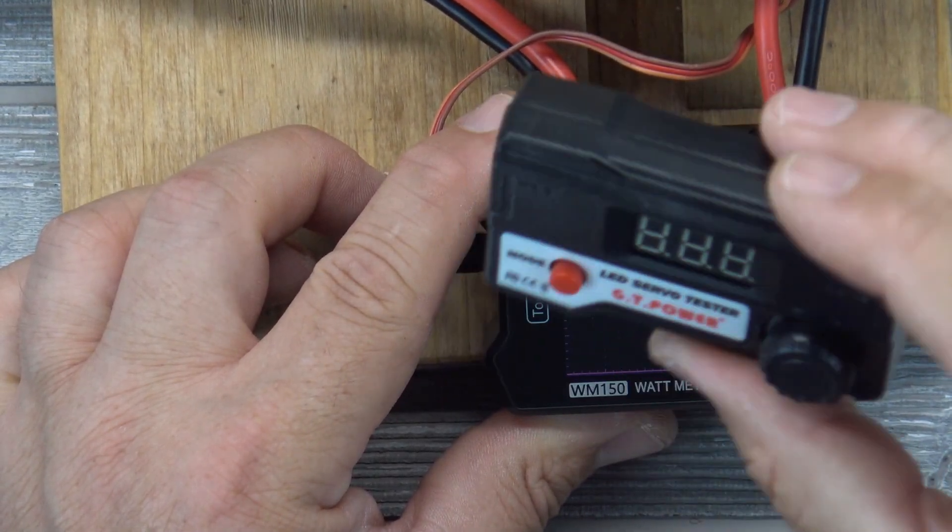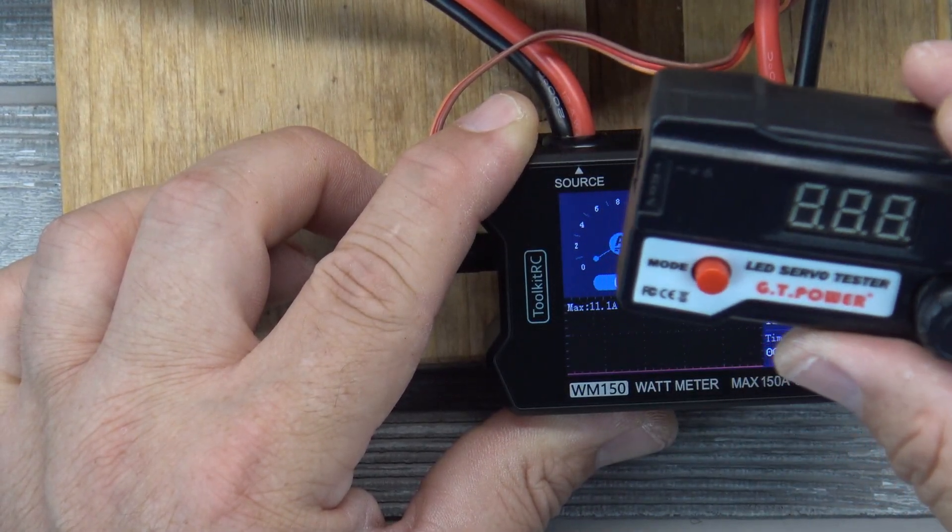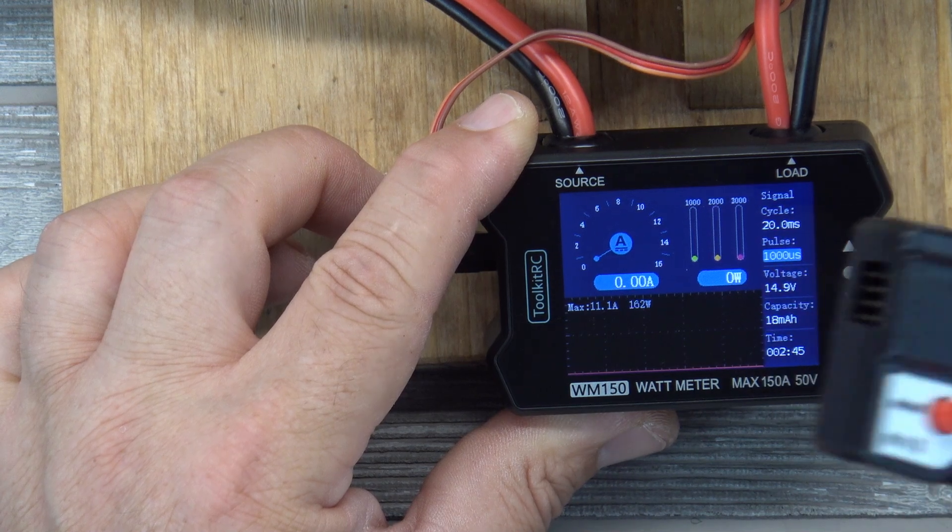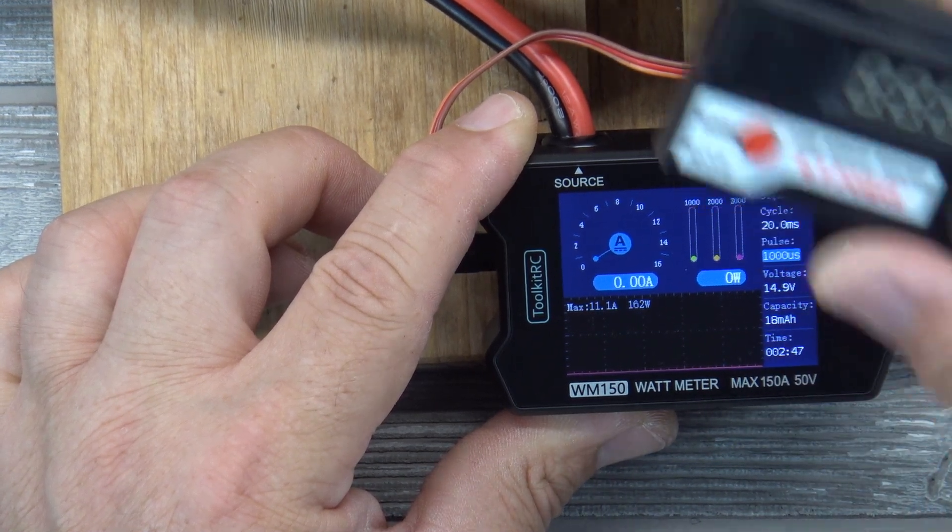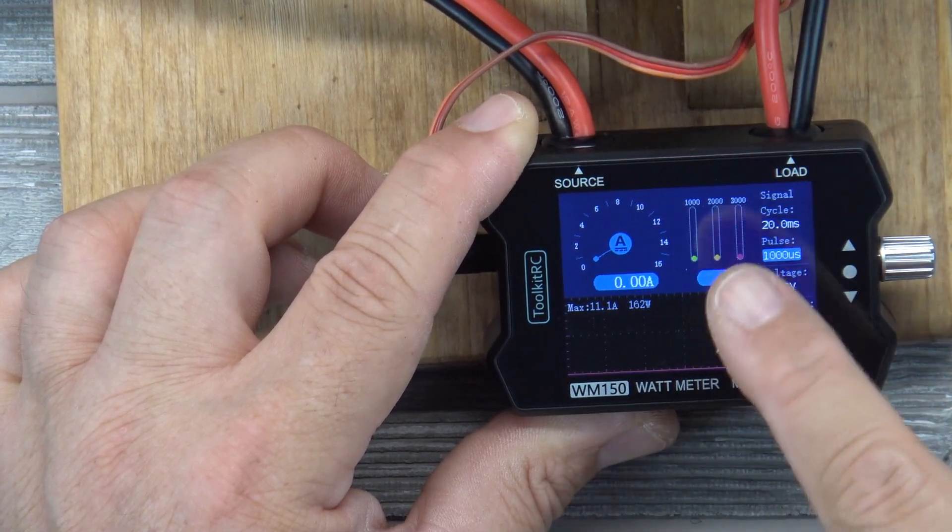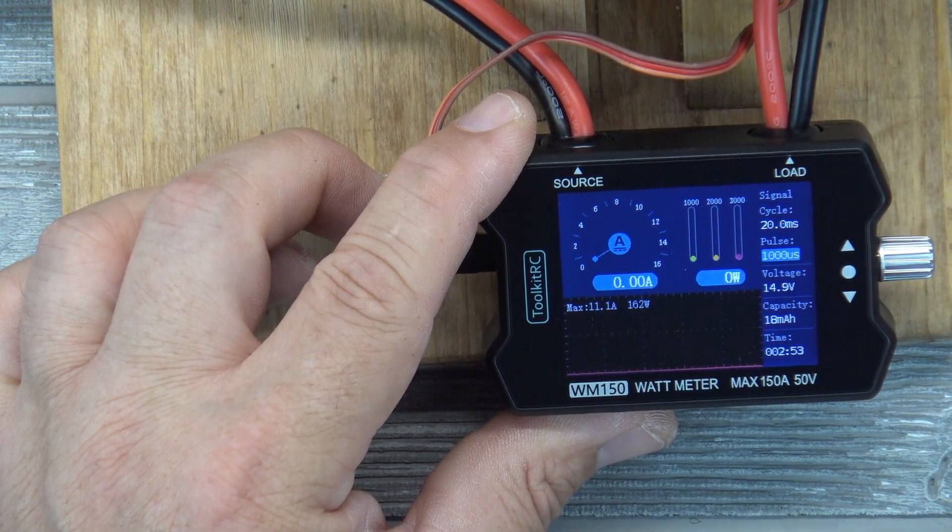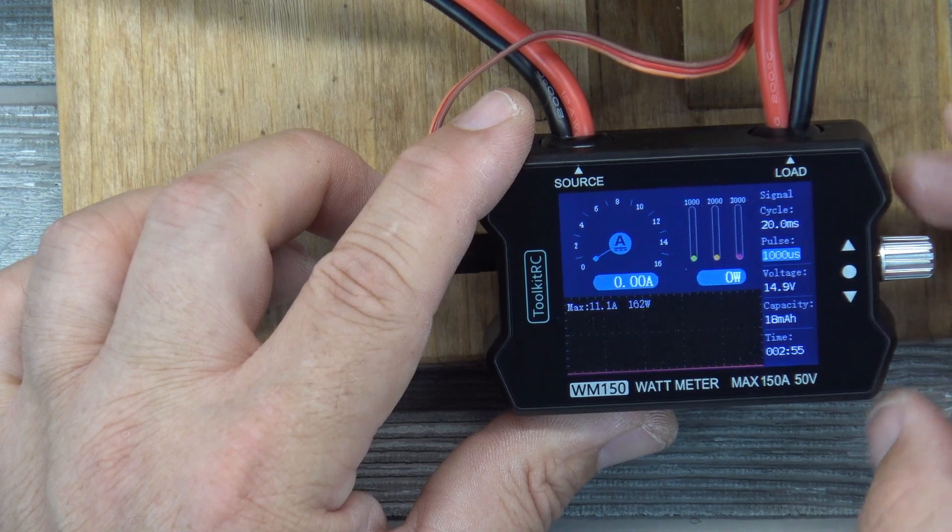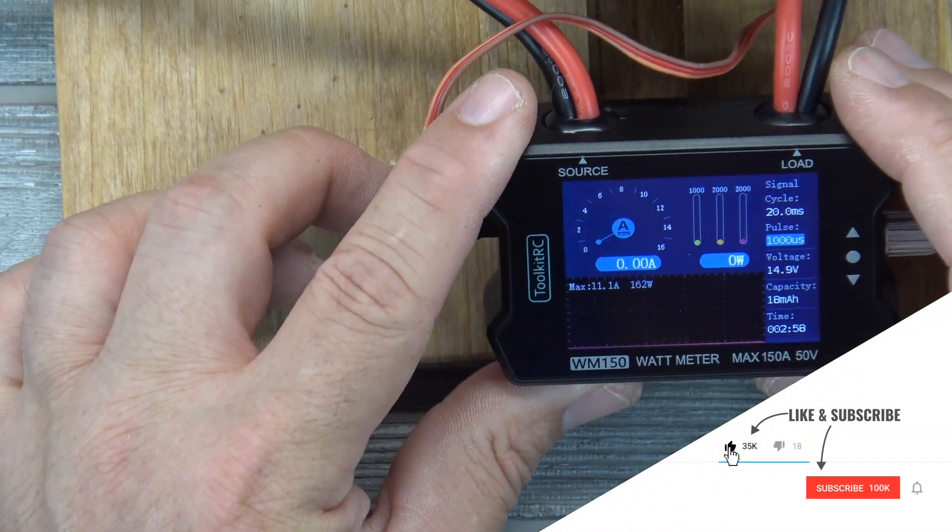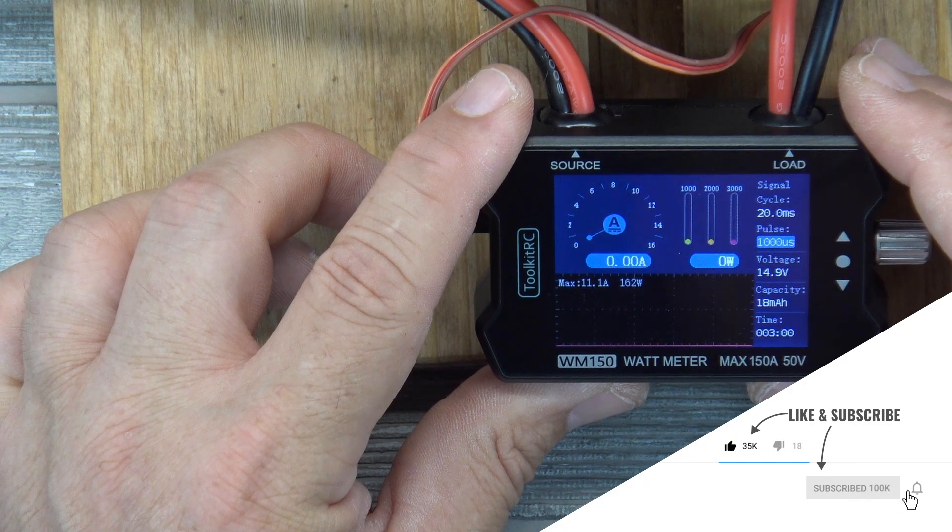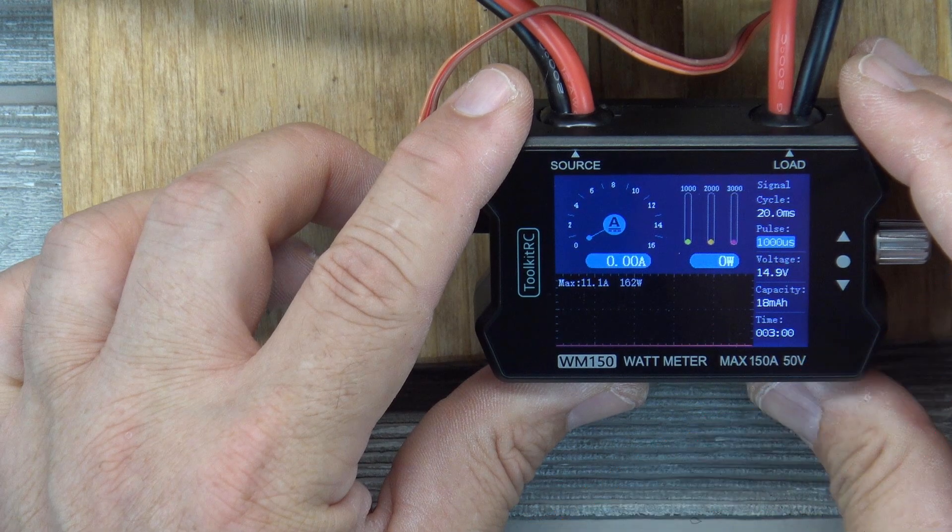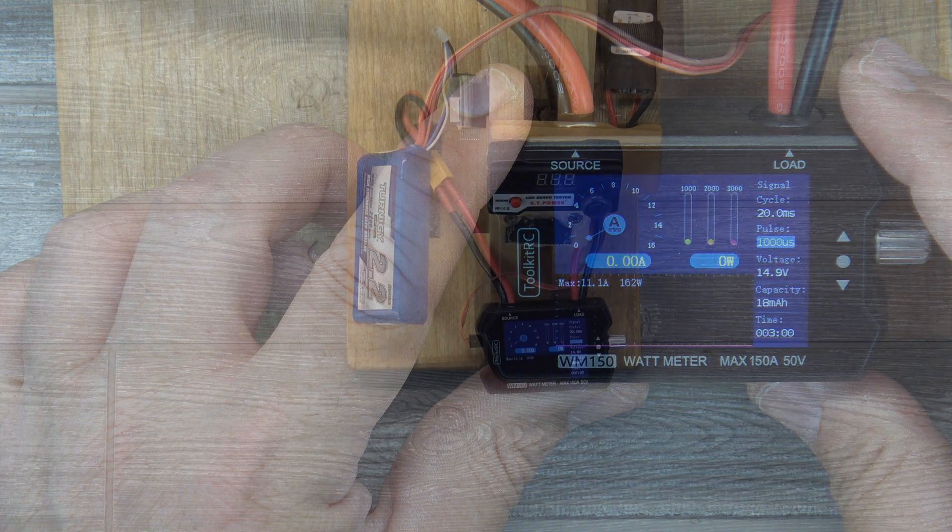So, this kind of combines both the wattmeter and the servo tester in one unit, which is not terrible. It's a nice, clean configuration. It's very easy to operate, very easy to understand, and I think it's effective. I do like the peak amperage at 150 and the peak voltage at 50 volts. That's cool. All right, guys, that wraps up my first look at the Toolkit RC WM150 wattmeter.